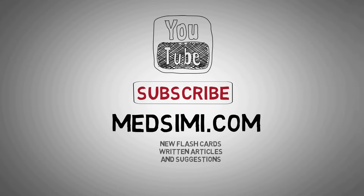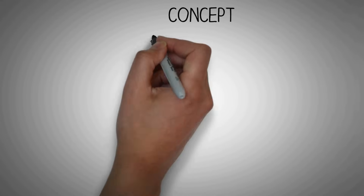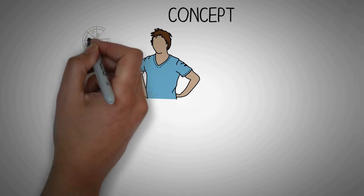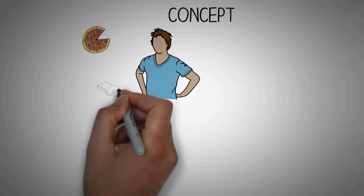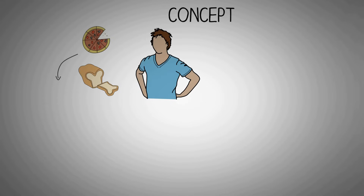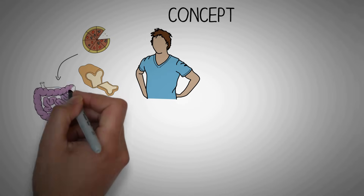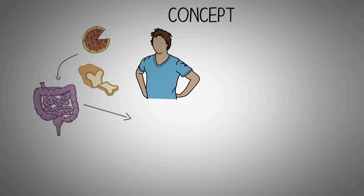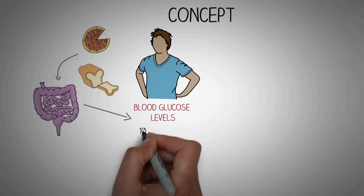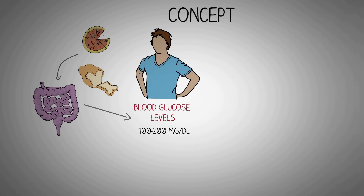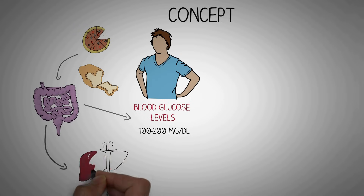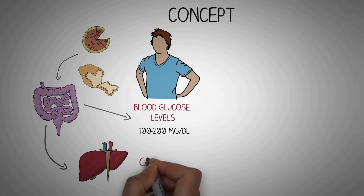The average person consumes food many times in a day which ultimately gets converted into glucose. This maintains blood glucose levels between 100-200 mg per deciliter throughout the day. The excess glucose gets converted to glycogen which is stored in the liver, and this is used later when blood glucose levels fall.